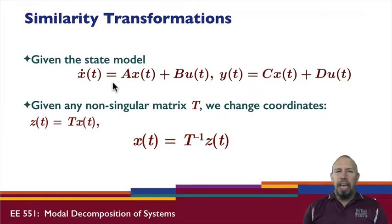First, we're going to refresh our memories on what that similarity transformation is all about. If we have the states in a set of coordinates, the state model x dot equals Ax plus Bu, y equals Cx plus Du, then given a non-singular matrix, we can change coordinates. Now I'm going to call the new coordinate z, z equals T times x.